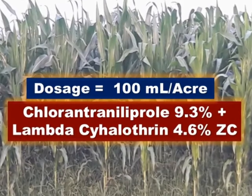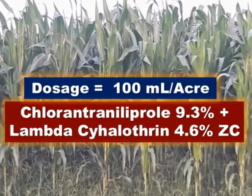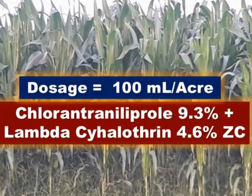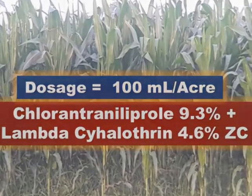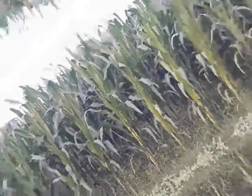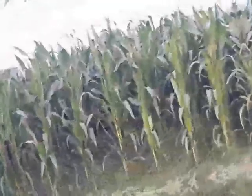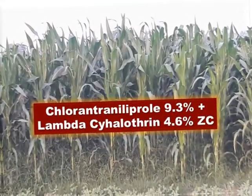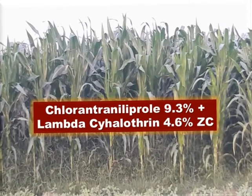Mix 100 milliliters in 200 liters of water, or as may be required, and prepare the spray solution. Then spray it on the maize crop infested with fall armyworm to control it effectively.